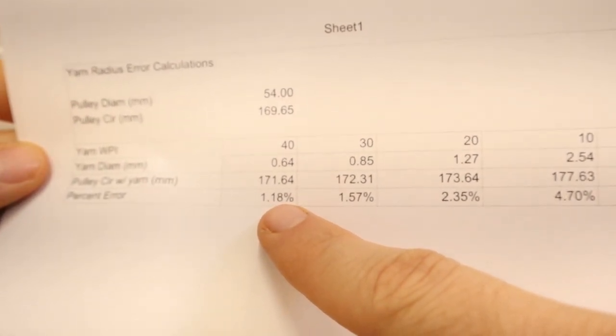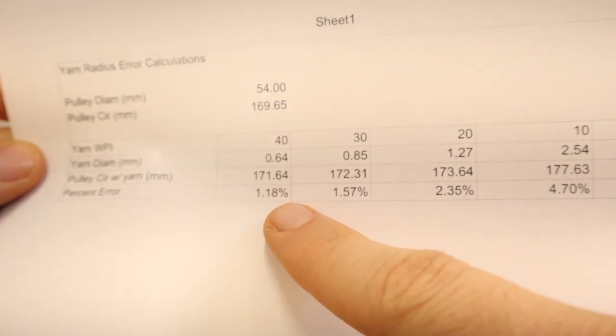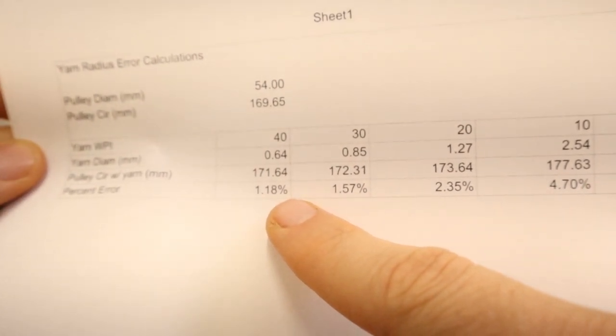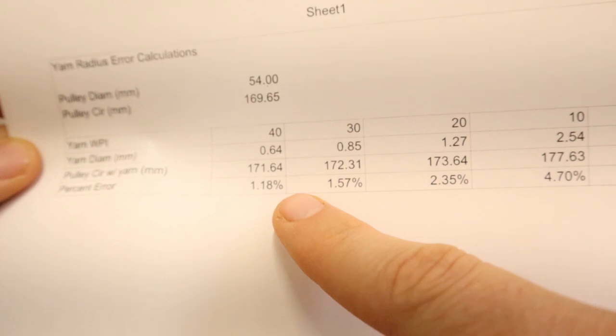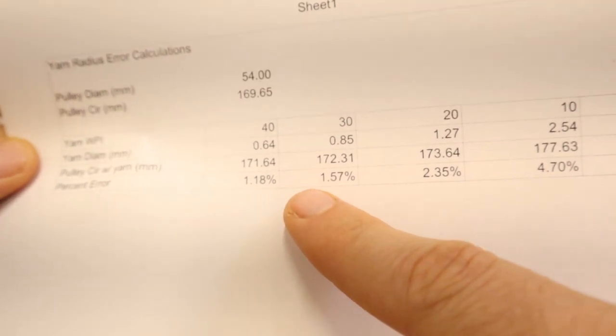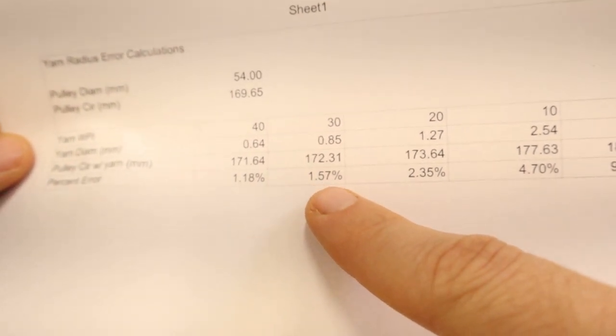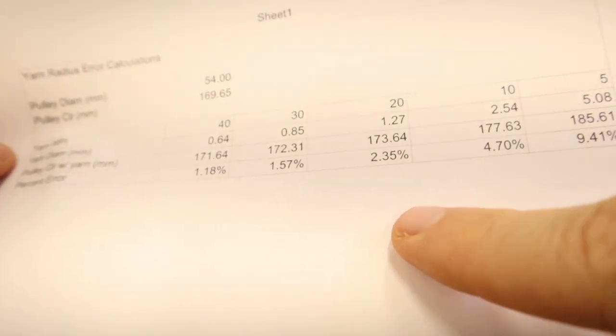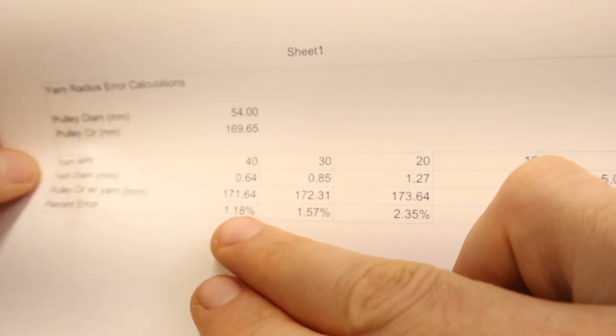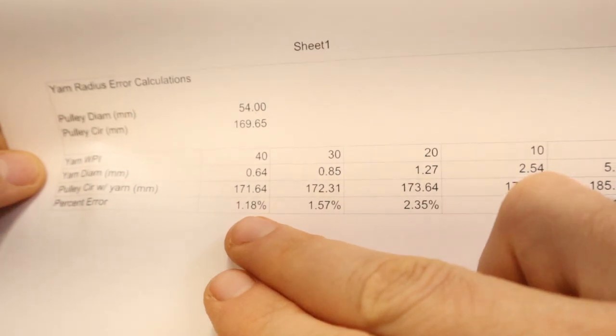These are the percentage error theoretical if the yarn is perfectly round. If you have 40 wraps per inch yarn, you're right around one percent error. That's a very small amount of error, because you're going to get some error just from the yarn stretching.